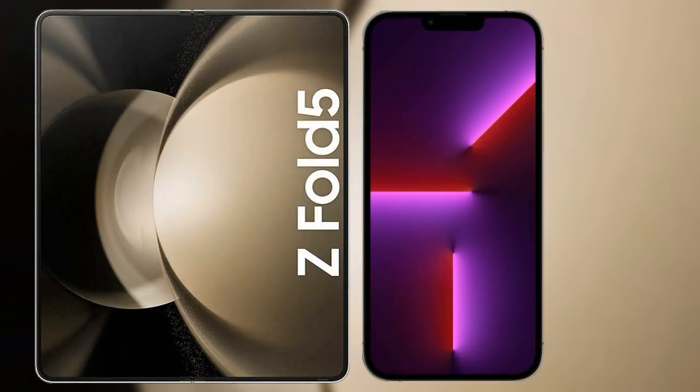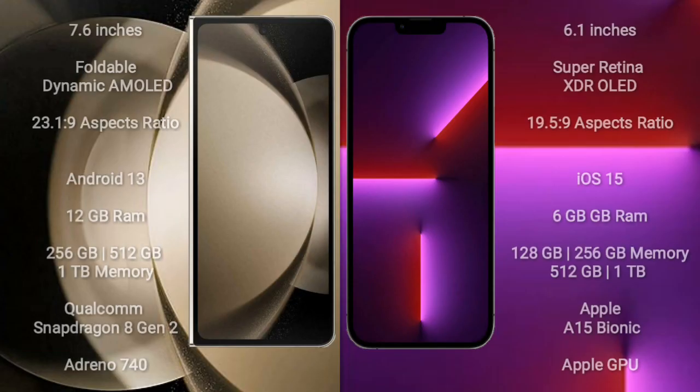I will compare the new Samsung Galaxy Z Fold 5 with iPhone 13 Pro. Samsung Galaxy Z Fold 5 comes with a 7.6-inch foldable dynamic AMOLED display and aspect ratio 23.1:9. iPhone 13 Pro comes with a 6.1-inch Super Retina XDR OLED display and aspect ratio 19.5:9.